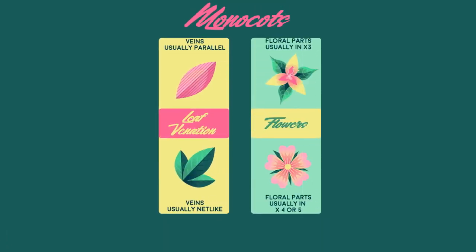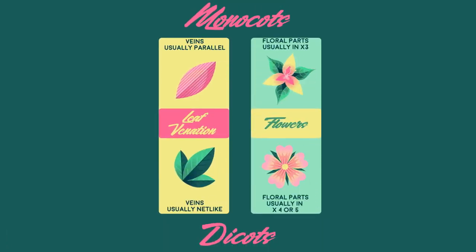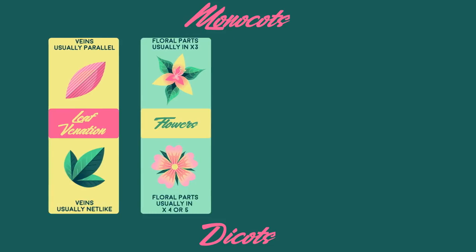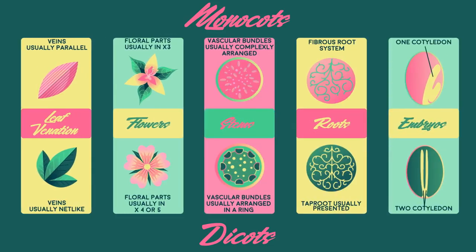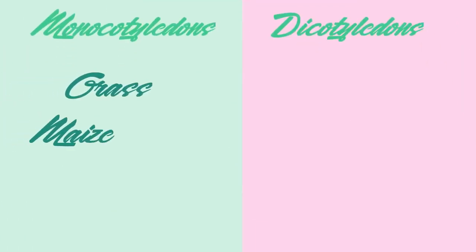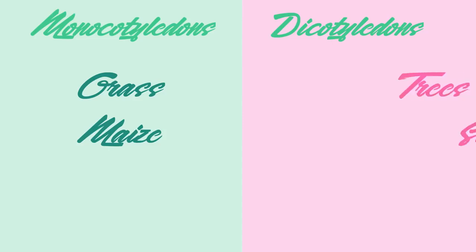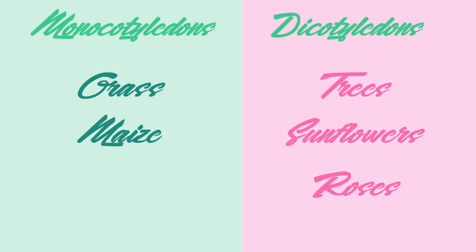Some observable differences are that monocots have parallel veins and petals in groups of three, whereas dicots have net-like veins and petals in groups of four or five. There are other differences as well, but we don't need to worry too much about these at this stage. Grass and maize are examples of monocots, whereas trees, sunflowers, and roses are examples of dicots.